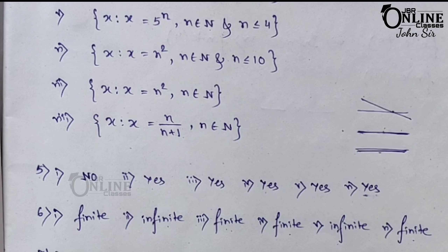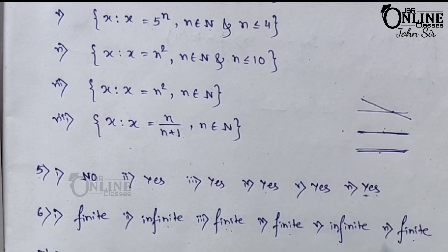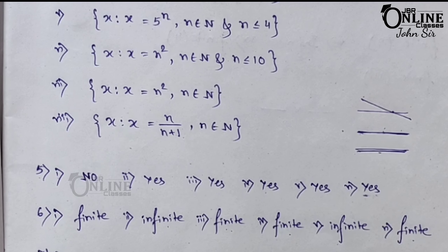Number 4: the set of all Indians having 8 legs. This can never happen, so the answer is zero. Number 5: the set of all letters in the word 'principle'. How many letters are there? It's 7 — repetition not allowed. That's why it's 7.